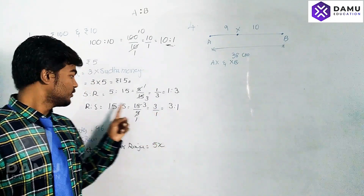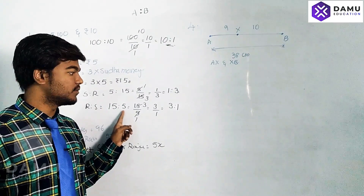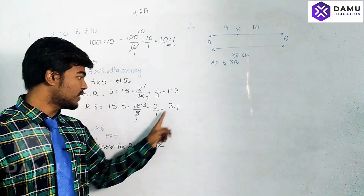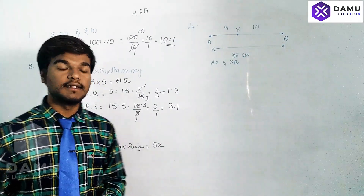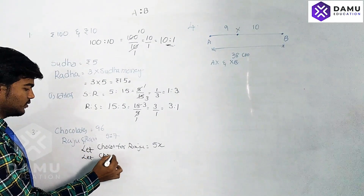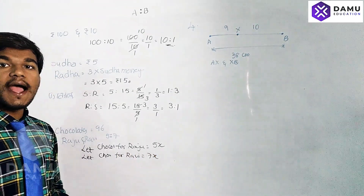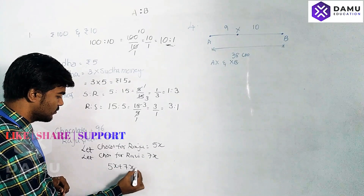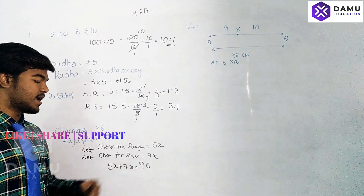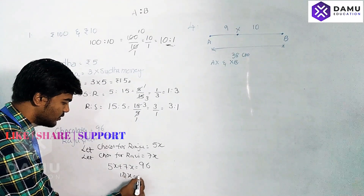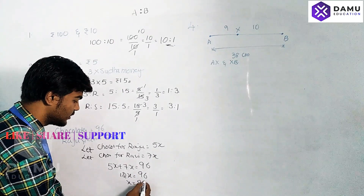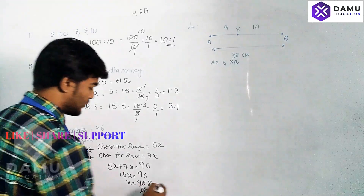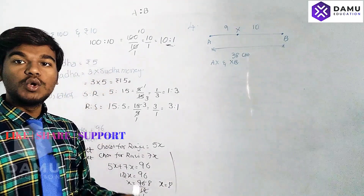For example, if Raju has 15 chocolates and Ravi has 5, multiplying some constant with both gives those chocolate counts. So let chocolates for Ravi equal 7X. Adding both: 5X plus 7X equals 96. So 12X equals 96, therefore X equals 96 by 12, which is 8. So X is equal to 8.